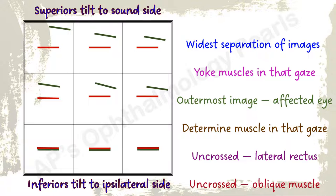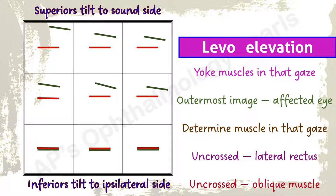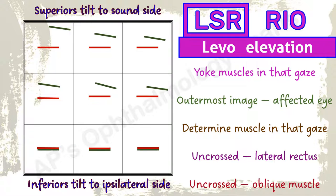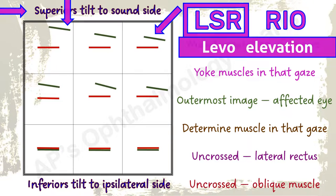Here the maximum separation of images is in levo elevation. The yoke muscles acting in levo elevation are the left superior rectus and the right inferior oblique. Green is the outermost image, so the left eye is involved — therefore this is a left superior rectus palsy. This is a crossed diplopia, so the rectus checks out. Tilt is towards the sound right side, so the superior checks out.